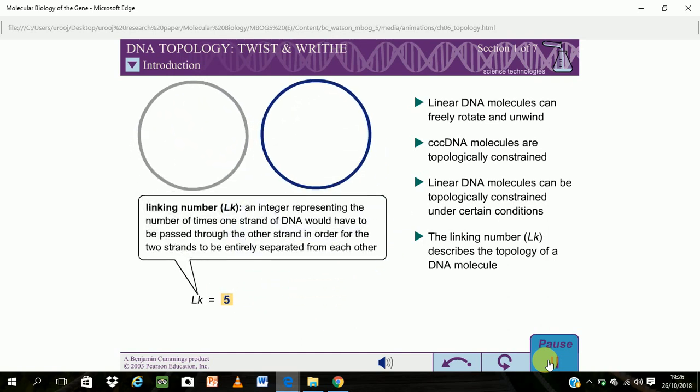The linking number is always an integer. The linking number is an invariant topological property of CCC DNA. No matter how much a CCC DNA molecule is distorted, the linking number remains constant. The linking number is the sum of two geometric components called twist and writhe.